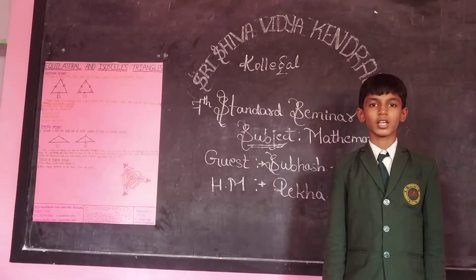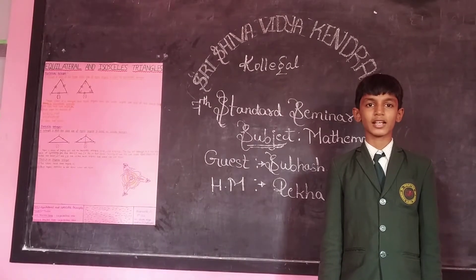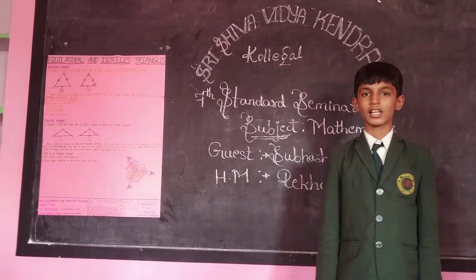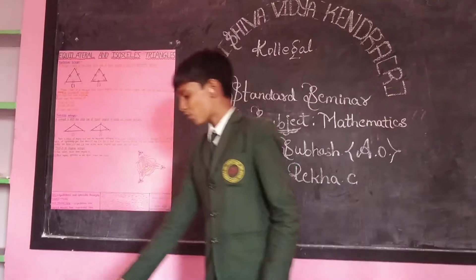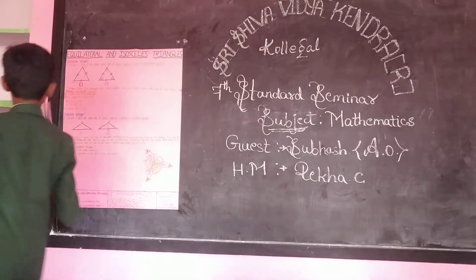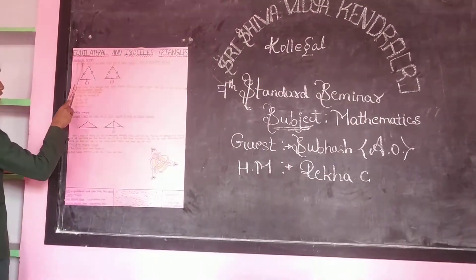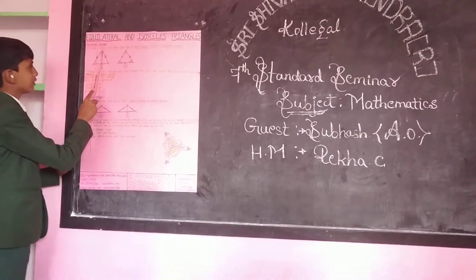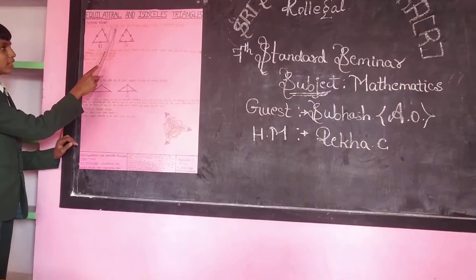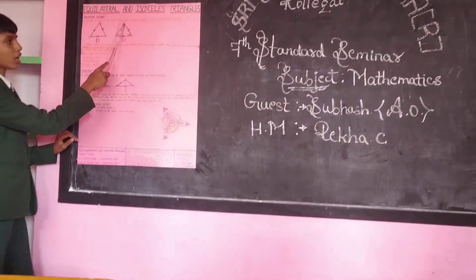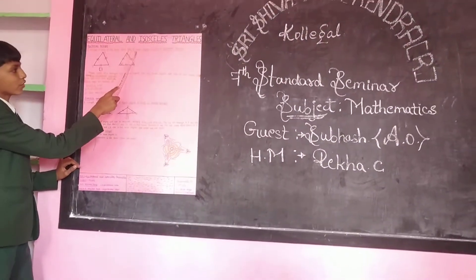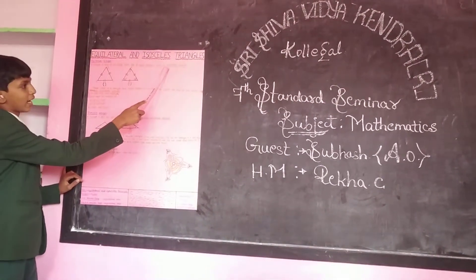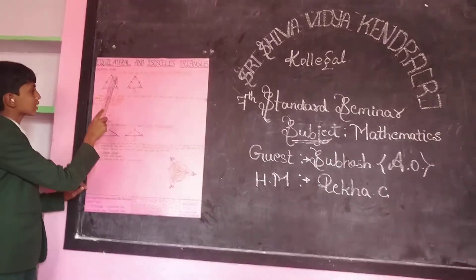Today I am talking about equilateral and isosceles triangles. First, the equilateral triangle. A triangle in which all three sides are equal, of equal length, is called an equilateral triangle.